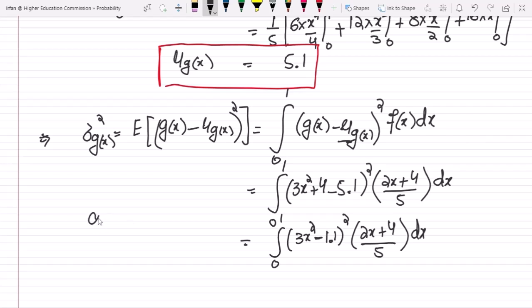Then opening up this using a plus b whole square equals a square plus 2ab plus b square and multiplying them out and applying the integration, the answer is 0.83 and that is the solution.